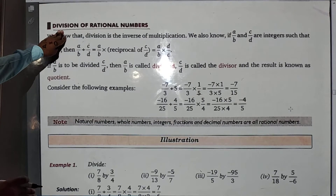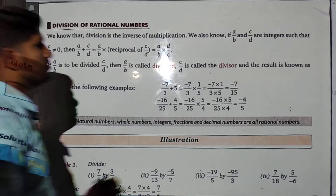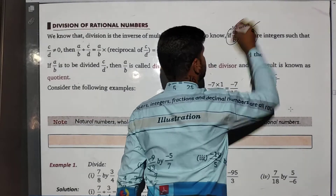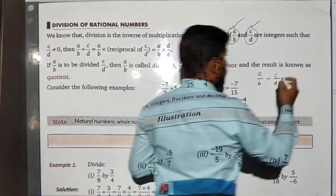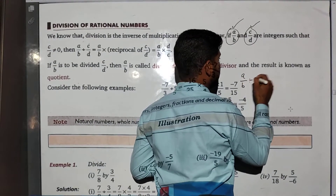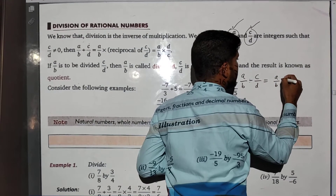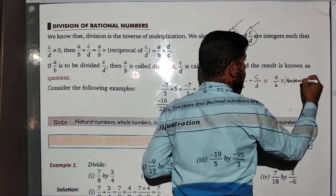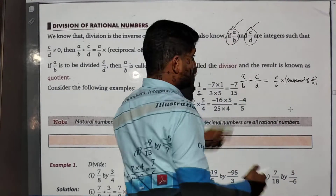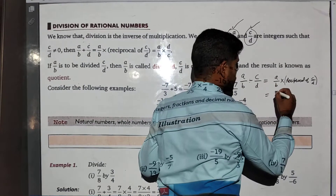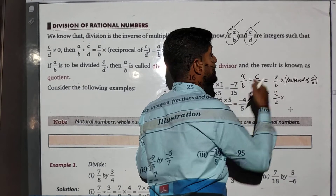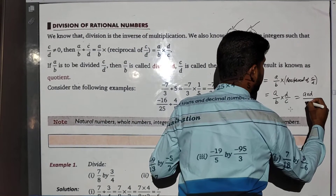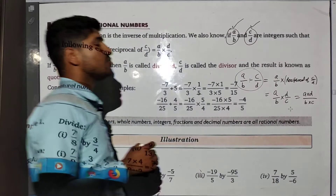If we have two rational numbers and we have to divide them — a/b divided by c/d, where a/b and c/d are two rational numbers — then this equals a/b multiplied by the reciprocal of c/d. The division sign changes to multiplication and we take the reciprocal of c/d, which is d/c. So the result is (a×d)/(b×c).